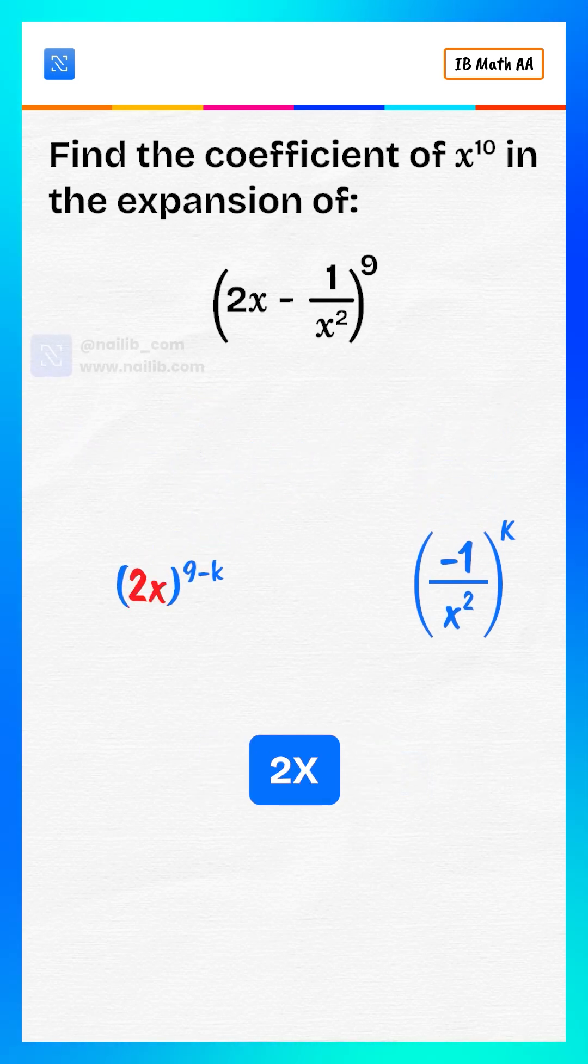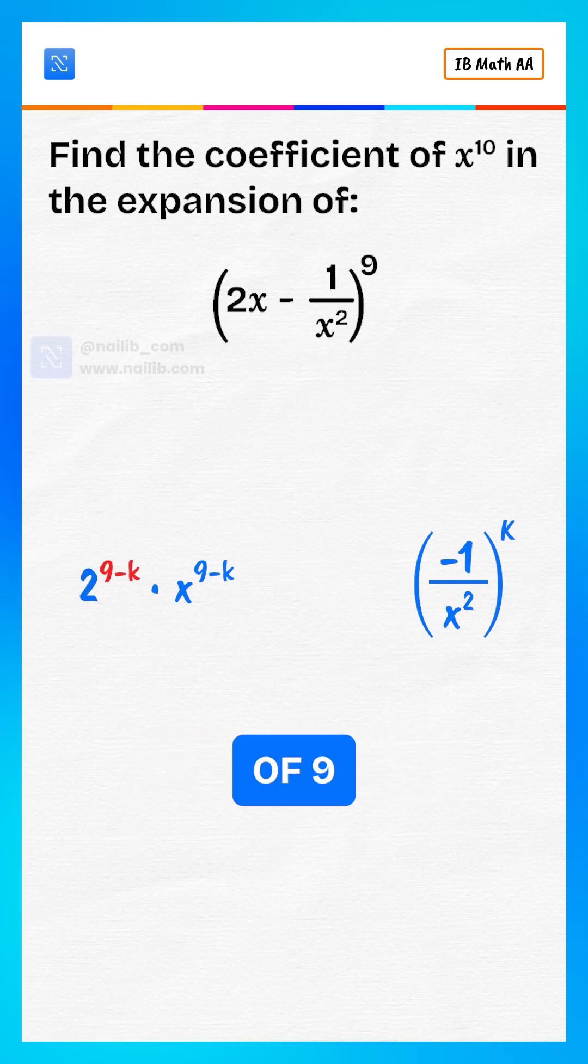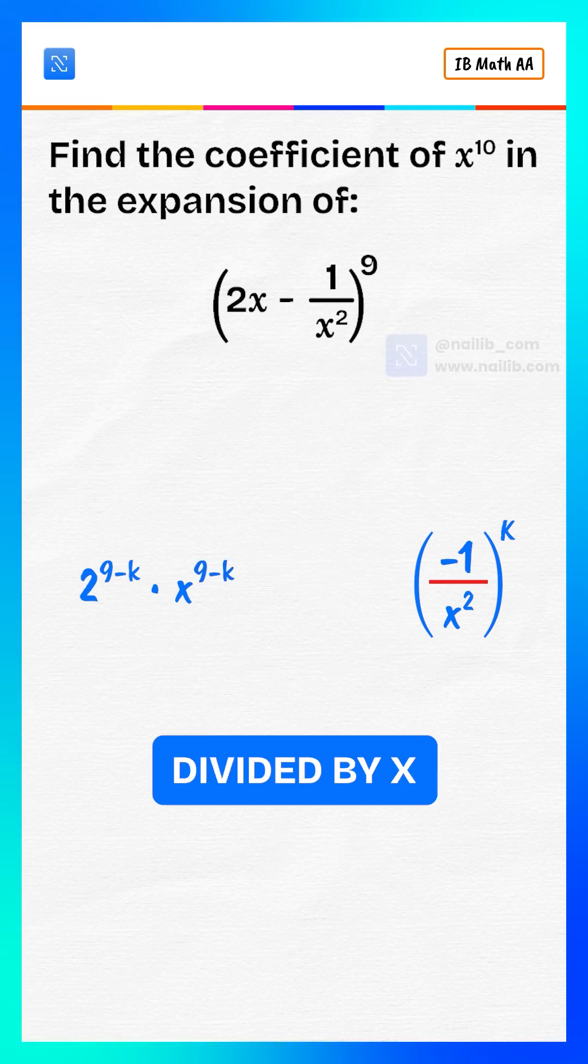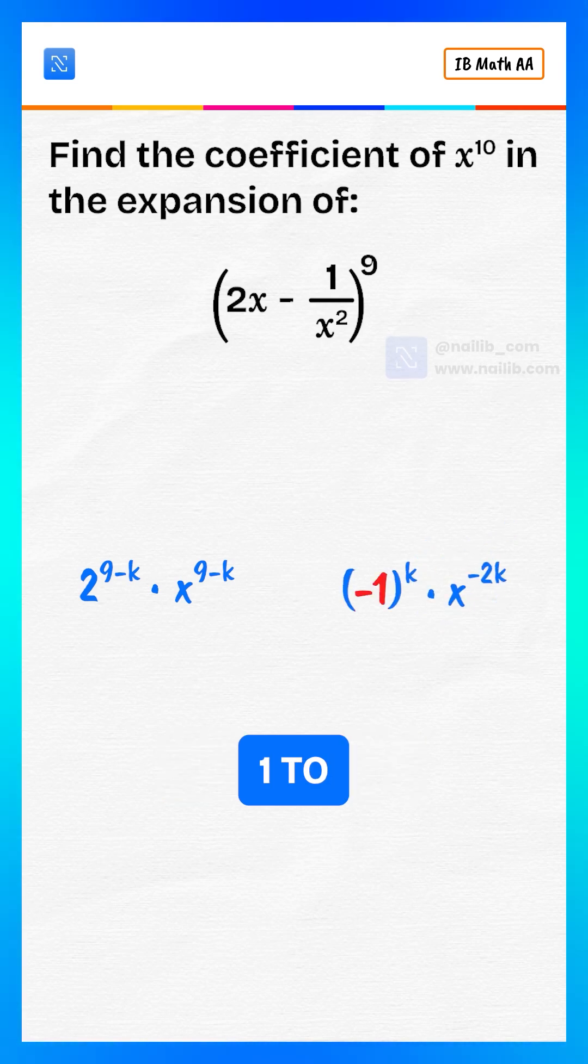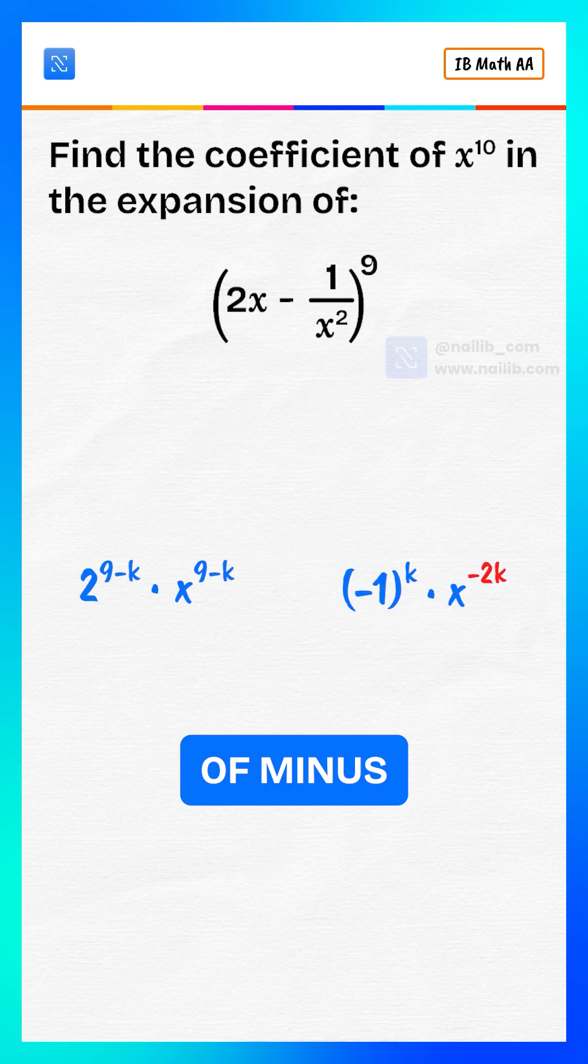Break it down. 2x to the power of 9 minus k becomes 2 to the power of 9 minus k, multiply by x to the power of 9 minus k. Minus 1 divided by x squared to the power of k becomes minus 1 to the power of k, multiply by x to the power of minus 2k.